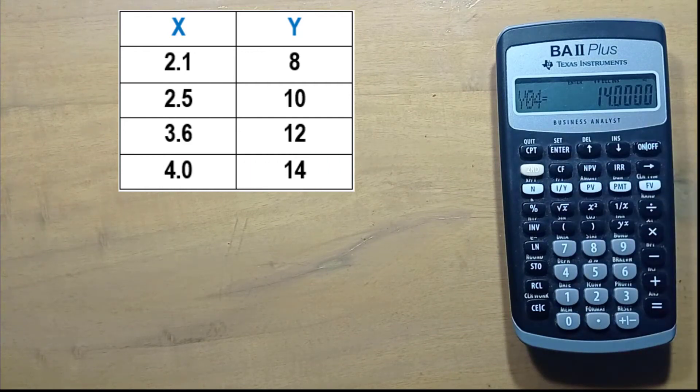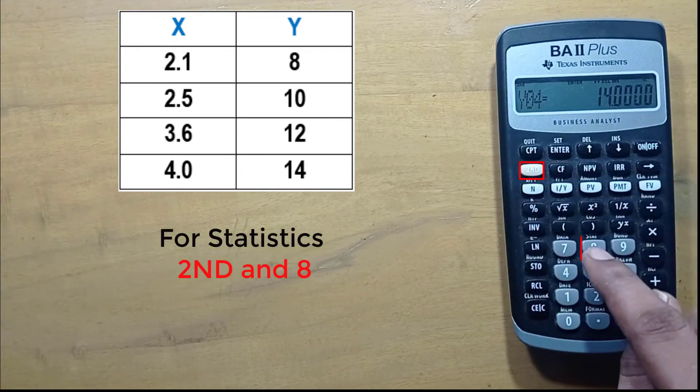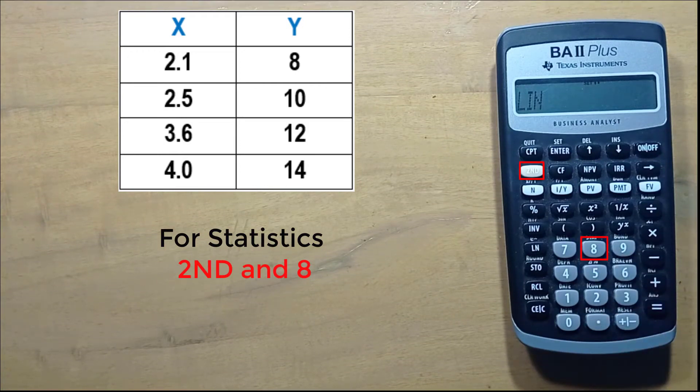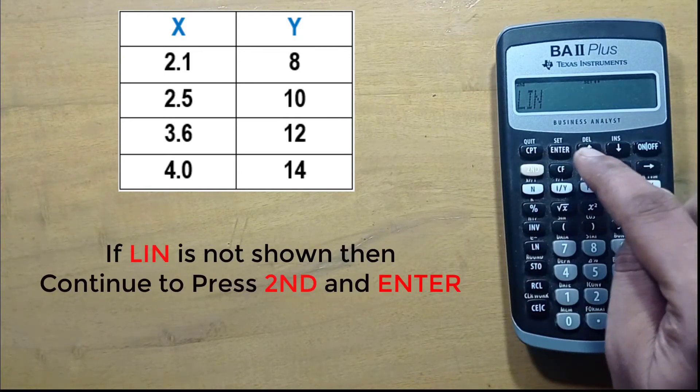After entering the last value, press 2nd and STAT. By default, this calculator shows LinReg for standard linear regression. If LinReg is not shown, continue to press 2nd then enter.